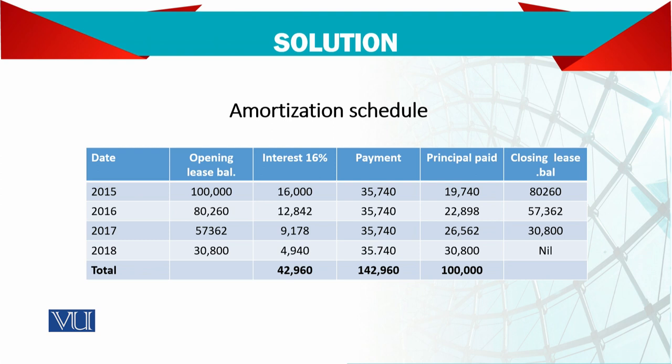You are paying 35,740 but that includes interest of 16,000, so the difference of 35,740 and 16,000 is the principal paid. Your liability was 100,000 — that's your asset — and you paid only 19,740 out of it, so the balance still to pay is 80,260.